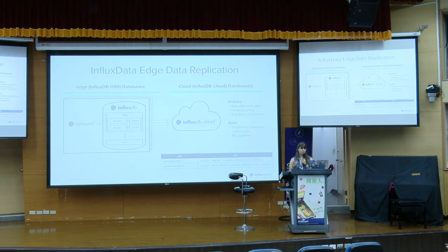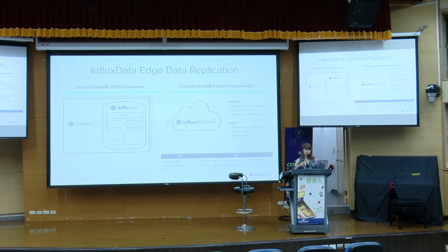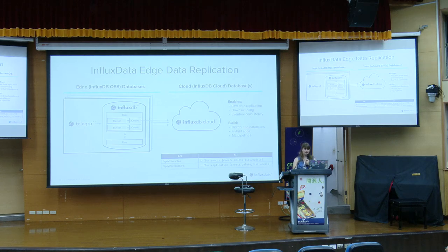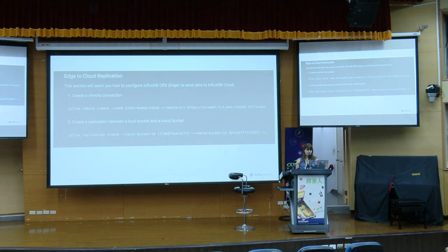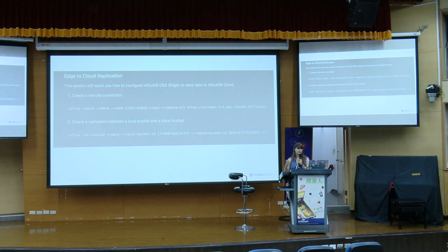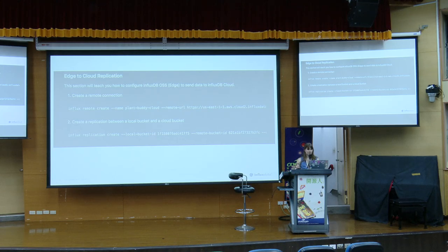InfluxDB has a built-in edge data replication feature. You can do edge-to-cloud between two different open source versions — you don't just have to do open source to cloud. It allows you to store your data on disk in a disk-backed queue, which you can then send up to the cloud when connected. Ideally you're always connected, but that's not always how it works. Setting this up is pretty straightforward: from our GitHub, it's basically just creating a remote connection and telling it which local bucket and which cloud bucket you'd like data stored in. It automatically connects them without needing separate client library writes.